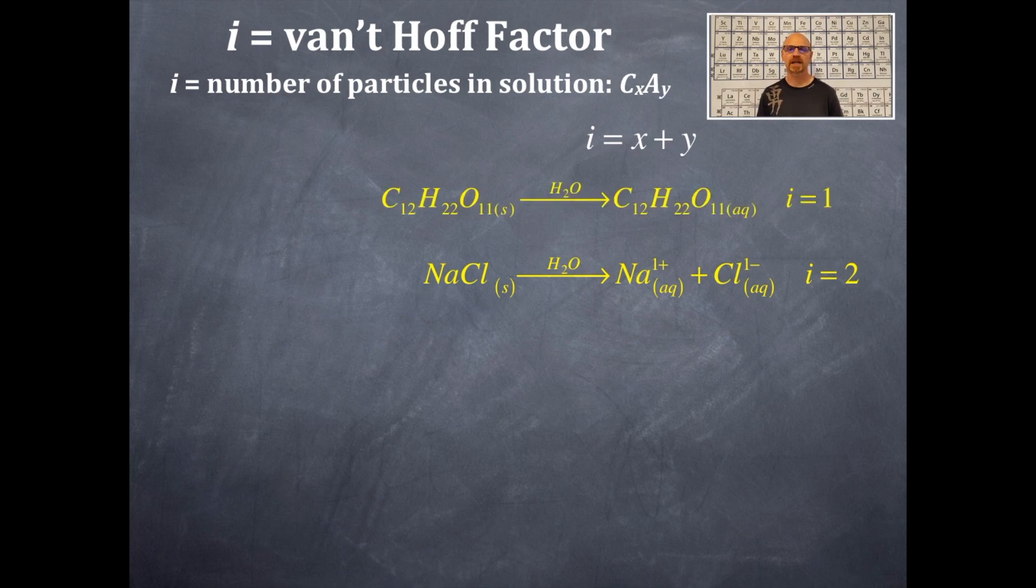All right, let's do another example. Here we go. So C₁₂H₂₂O₁₁ is like a molecular compound. It is not a cation anion combination. So when you put this molecule in water, it dissolves and does not dissociate. Unlike the sodium chloride where it dissociated and broke apart between the cation and the anion. So that's why in this you get a van't Hoff factor of one.